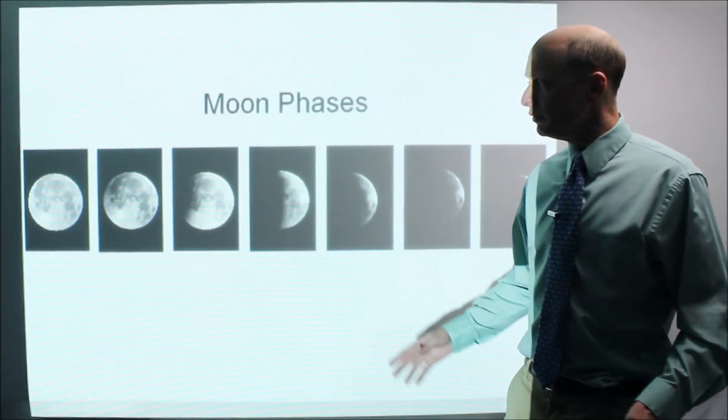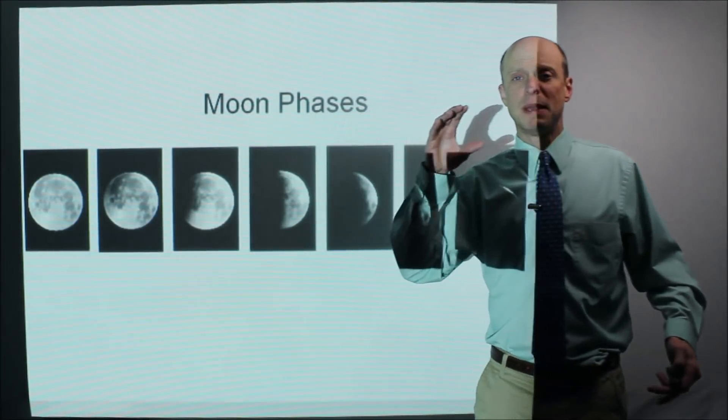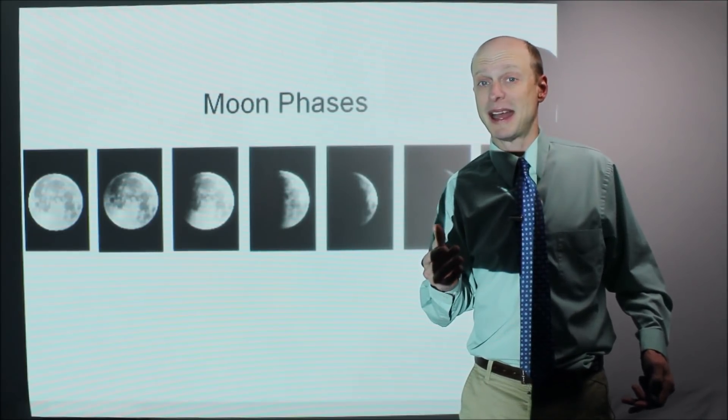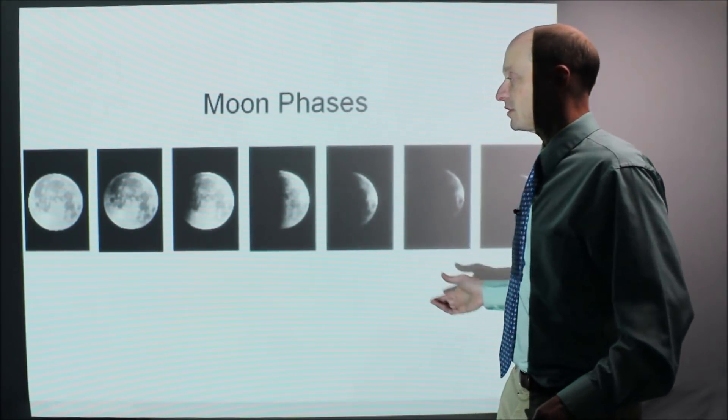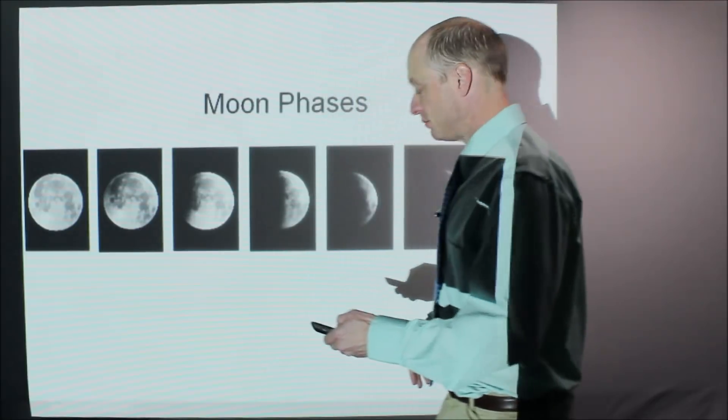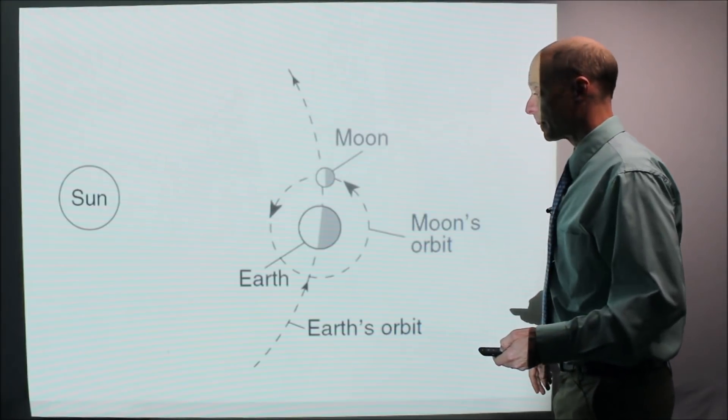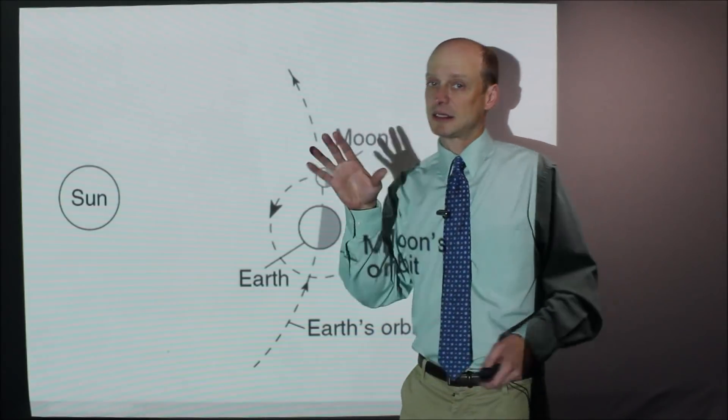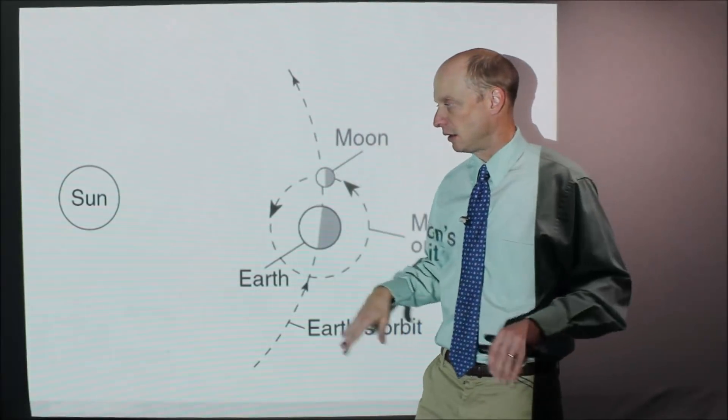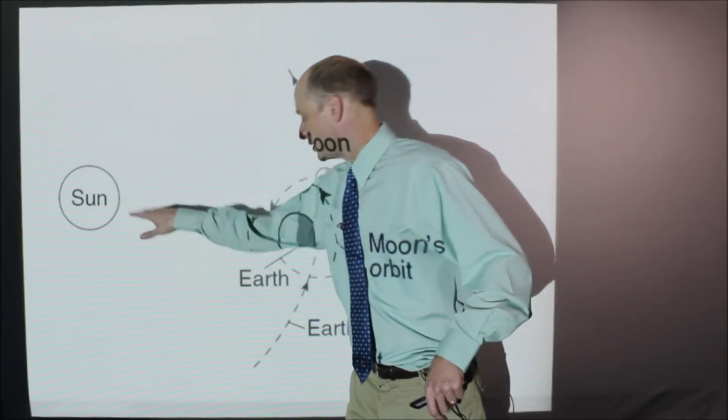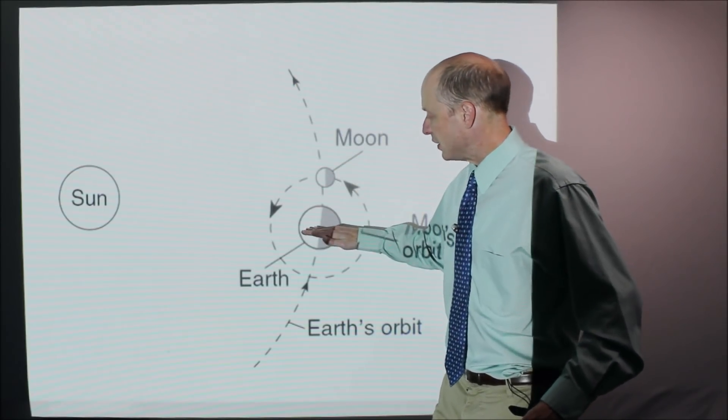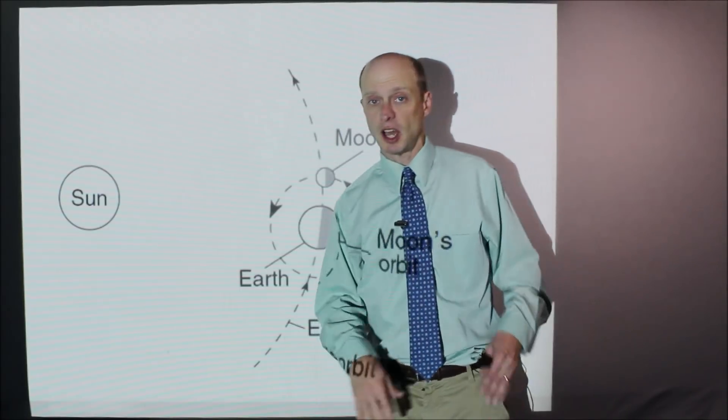By moon phases, it's basically how the moon looks to you at night when you look up at it from Earth. Here's an example of some of the moon phases that you might see. So just as a little overview, and this is not to scale, none of these pictures are to scale. The Sun is there, and Earth is here, and the moon is revolving around the Earth, and the Earth is also revolving around the Sun.